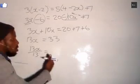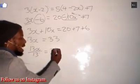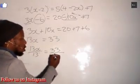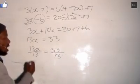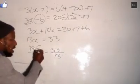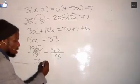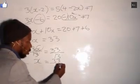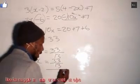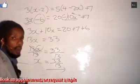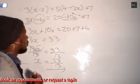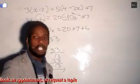So what you do on the left hand side, you do also on the right hand side where there is 33, so it's divided by 13. On the left hand side, 13 cancels 13 and you are left with x. So x equals 33 over 13. There is the value of our x when it comes to solving x in this kind of equation.